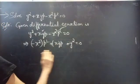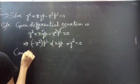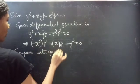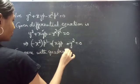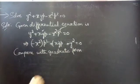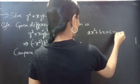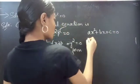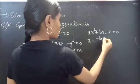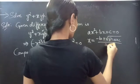This is in quadratic form — a quadratic equation in p. We compare with the standard quadratic equation ax squared plus bx plus c equals 0, and find roots using the quadratic formula: x equals minus b plus or minus square root of b squared minus 4ac, all divided by 2a.